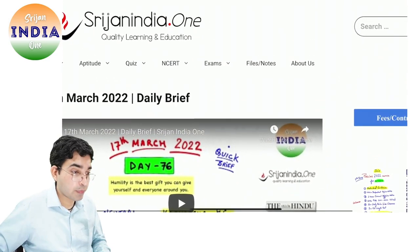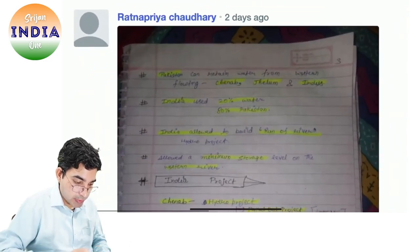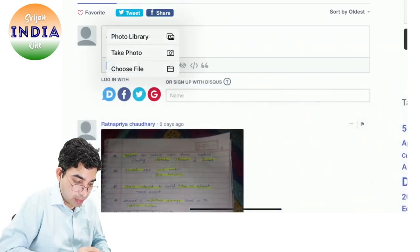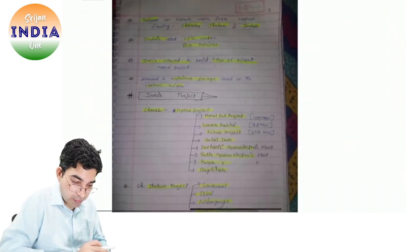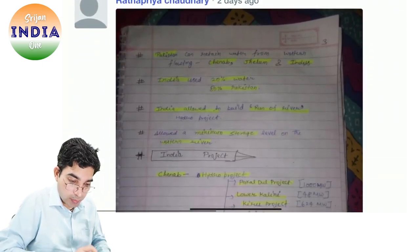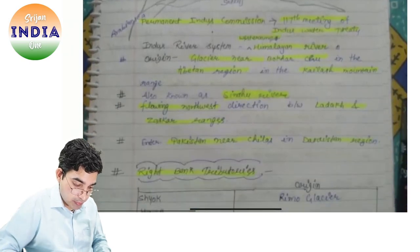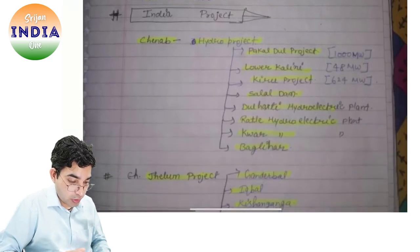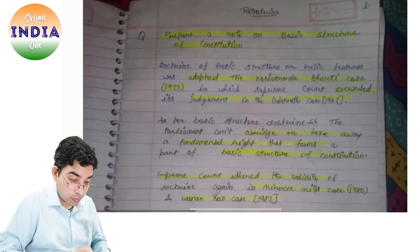Ab apan quickly answer writing dekhte hain — Indus River System, Basic Structure. Apan ne Ganga padh liya, aaj Indus padh lete hain, kal Brahmaputra dekhenge, phir Central India aur Peninsular India — river system confirm ho jayega — at least 5-6 number pakka yaahan se. So let us begin this discussion. Ye saare submissions hain. First answer hai Ratna Priya — aap join the discussion mein jaate hain, apni photo library se photos yahan upload karenge.